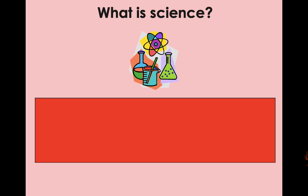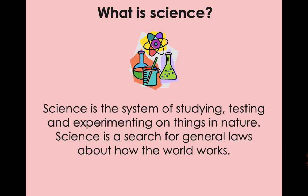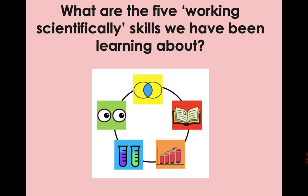Starting off — what is science? Hit pause, have a think. Science is the system of studying, testing and experimenting on things in nature. It's a search for general laws about the way the world works. That's a broad definition but it's a good way to enter into the study of it, because having your head in the right space is really important. We've been looking at working scientific skills this year — we've done quite a lot on research, observation and classifying, but what are all five of the working scientific skills? Hit pause, have a think.